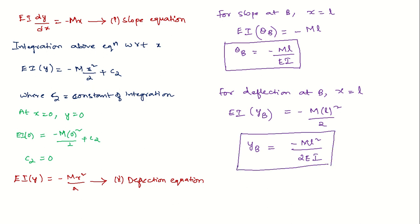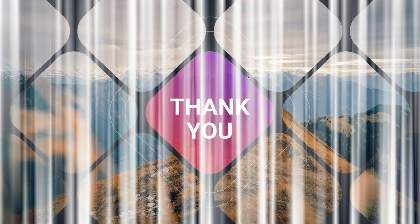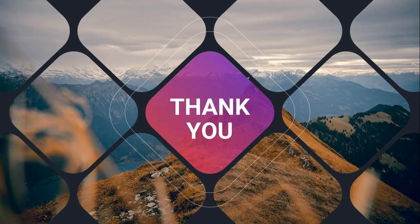The negative sign for yB indicates that the deflection is downward, so when writing downward deflection we use yB = ML²/2EI. The negative sign for slope indicates clockwise rotation. This is how you calculate deflection of a cantilever by the double integration method when carrying a moment at the free end.